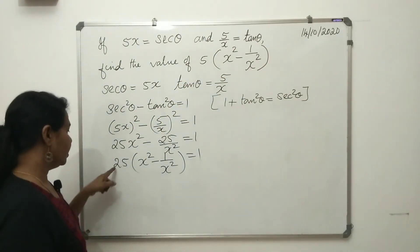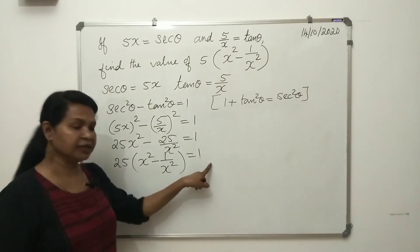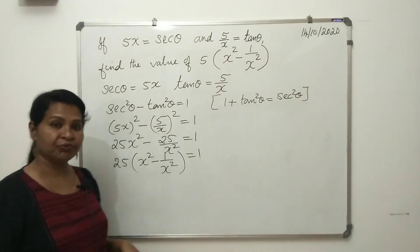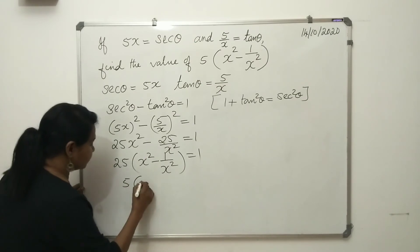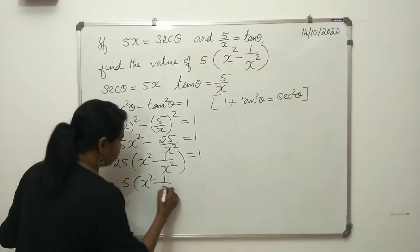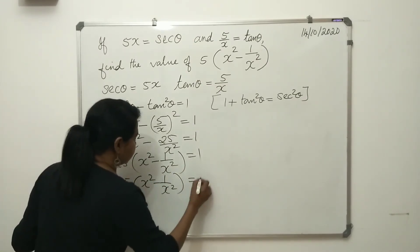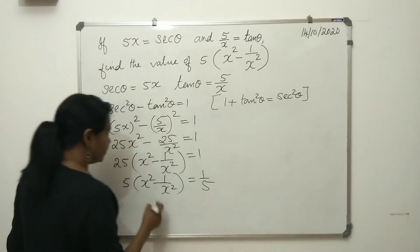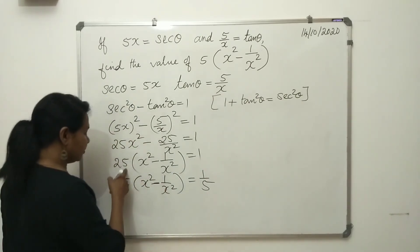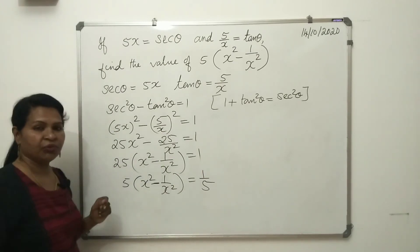So we can divide LHS and RHS by 5. We get 5 times (x² - 1/x²) is equal to 1/5. Right, that is dividing LHS and RHS by 5, we get this value.